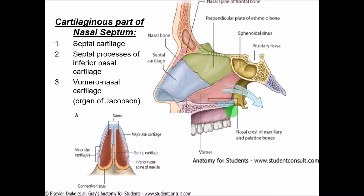The cartilages forming the nasal septum include mainly the septal cartilage, the septal process of the inferior nasal cartilage, and a small cartilage called the vomeronasal cartilage, where the organ of Jacobson and the olfactory part may be present. The main septal cartilage structure is the septal cartilage itself.